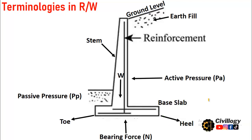First of all, one should understand the different terminologies used in relation to retaining walls, because it is very important before designing to understand the different parts of a retaining wall. In my previous video we discussed about different types of retaining walls, as that was also a continuation of the series on designing of walls. The key parts and terminologies include reinforcement — the steel that should be provided in the wall to add additional strength.